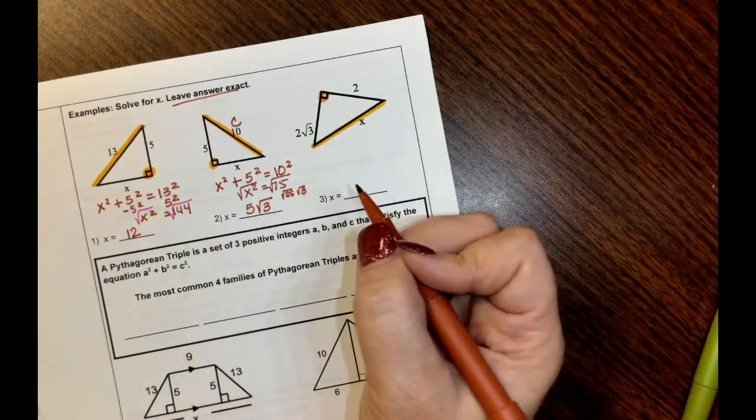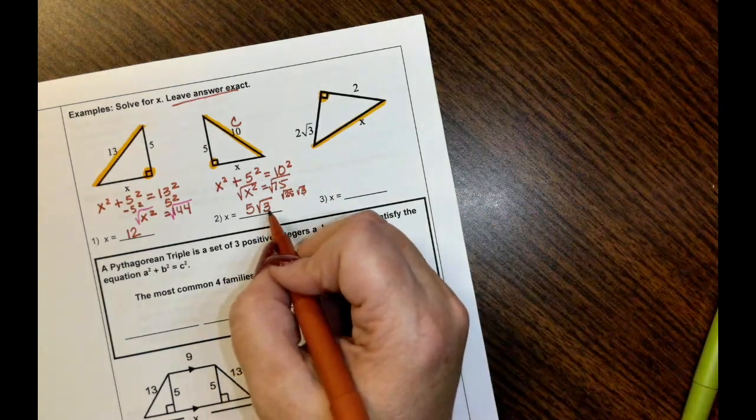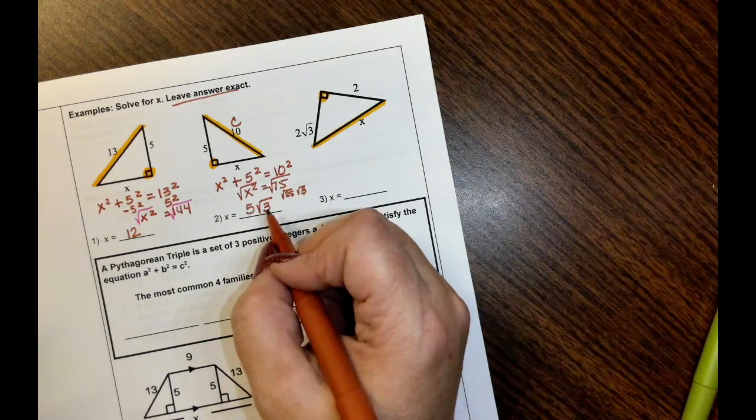The square root of 25 is 5 and the square root of 3 is a decimal. So the final answer is 5 times the square root of 3. That's the exact because I didn't have to round. I didn't have to do anything with the decimals at all.